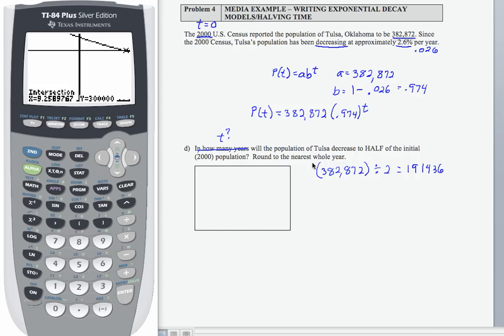So I don't know time. I want to set up the equation 191,436 equals my P of T function, 382,872 times 0.974 to the T. So the tool that we have at our disposal to solve this equation is our graphing calculator.